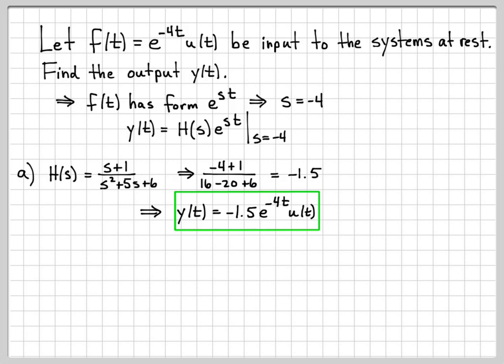This is much simpler than having to convolve e to the st with the impulse response. I didn't even have to find the impulse response — usually you would have to find it, which requires a lot of work, and then do the convolution. Since it's an exponential input, by finding the transfer function I can skip all that and go right to this answer to find the zero-state response.